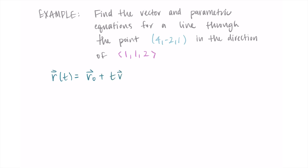Here, t is the variable — our parameter, our 'time' — which helps us draw out that line. r₀ is the vector that goes to the point we're looking for, and v is the vector that points in the direction we want. We have everything we need.